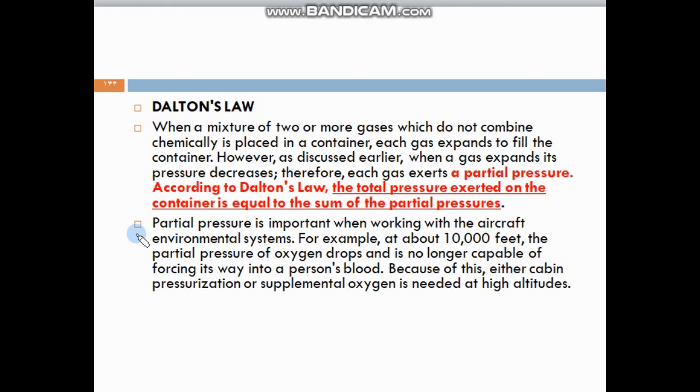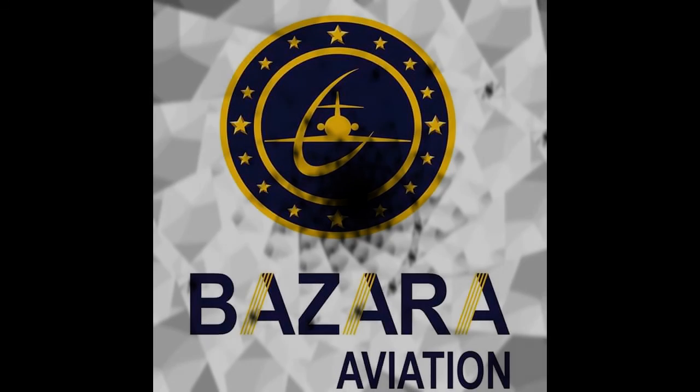What's the meaning of partial pressure? It's important when working with aircraft environmental systems. For example, at about 10,000 feet, the partial pressure of oxygen drops and is no longer capable of forcing its way into a person's blood. Because of this, either cabin pressurization or supplemental oxygen is needed at high altitude.